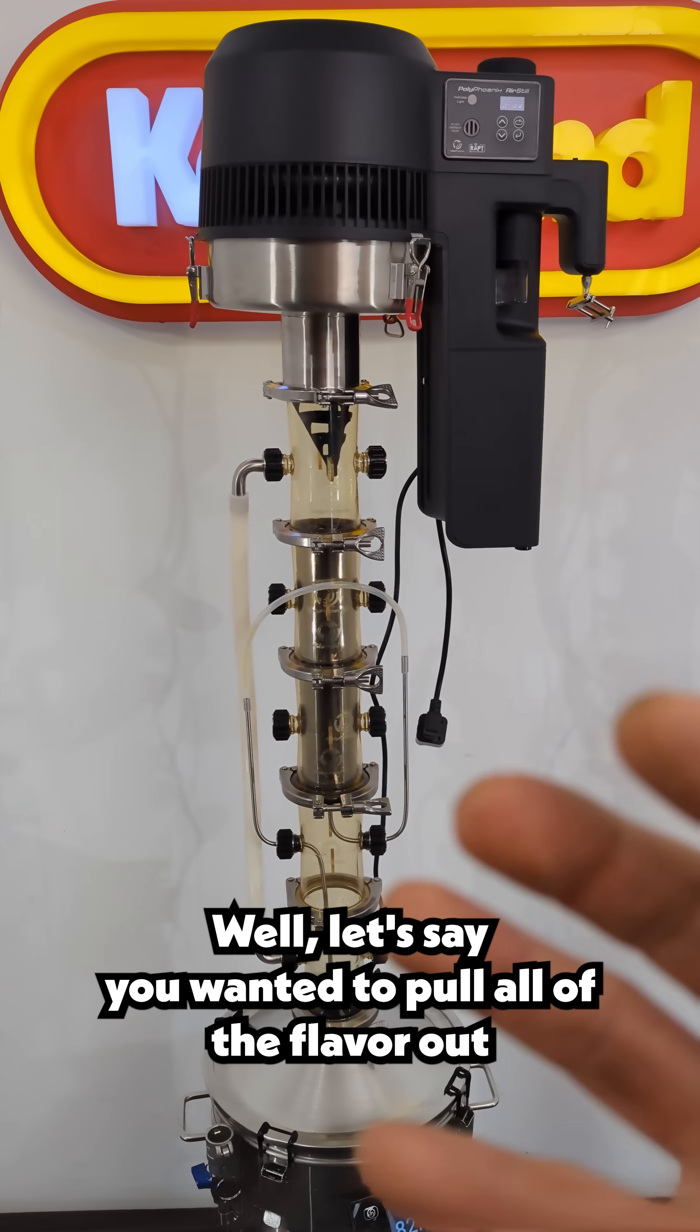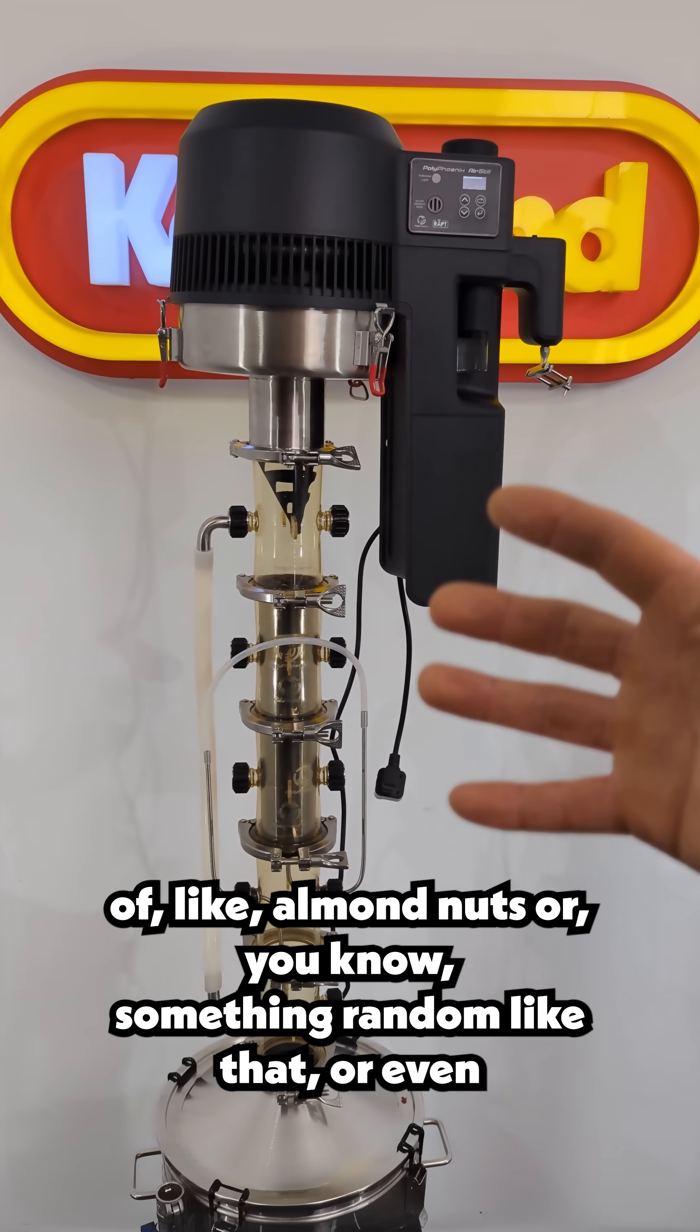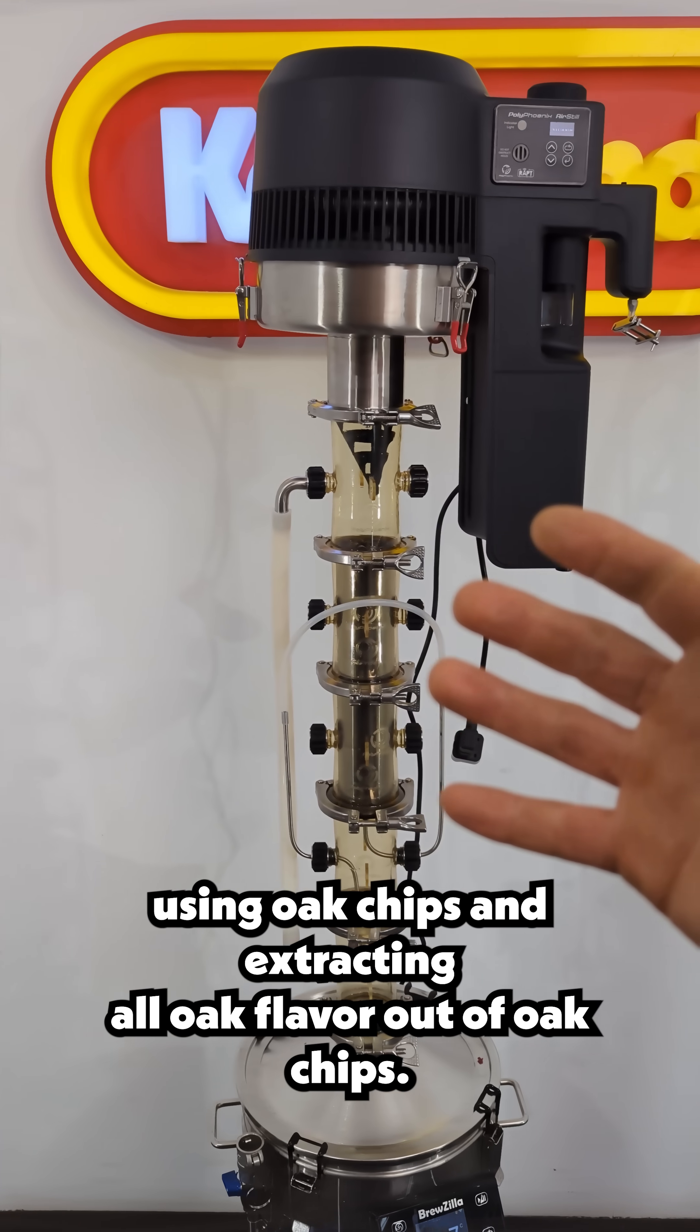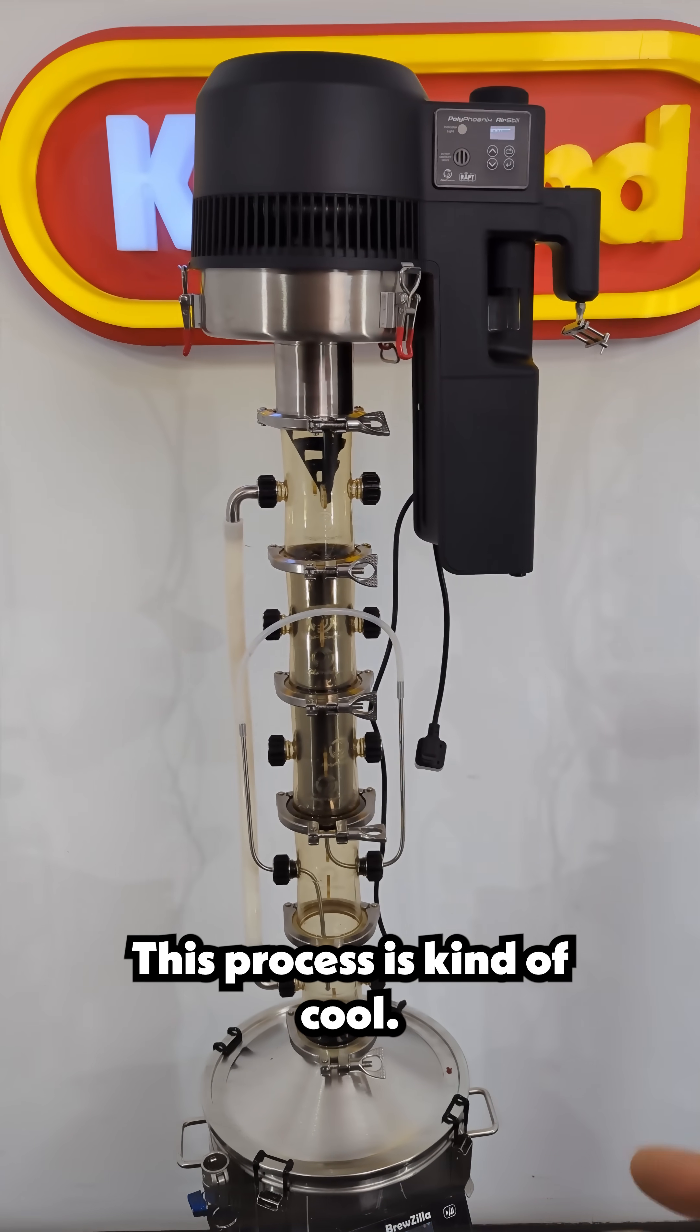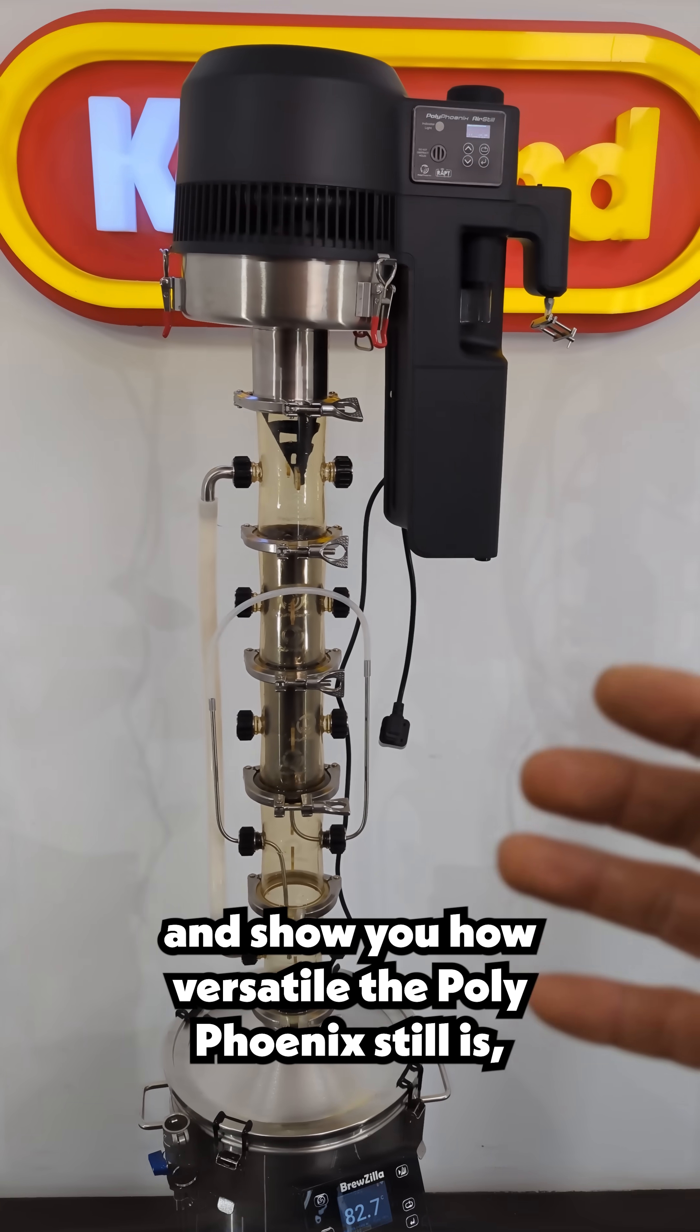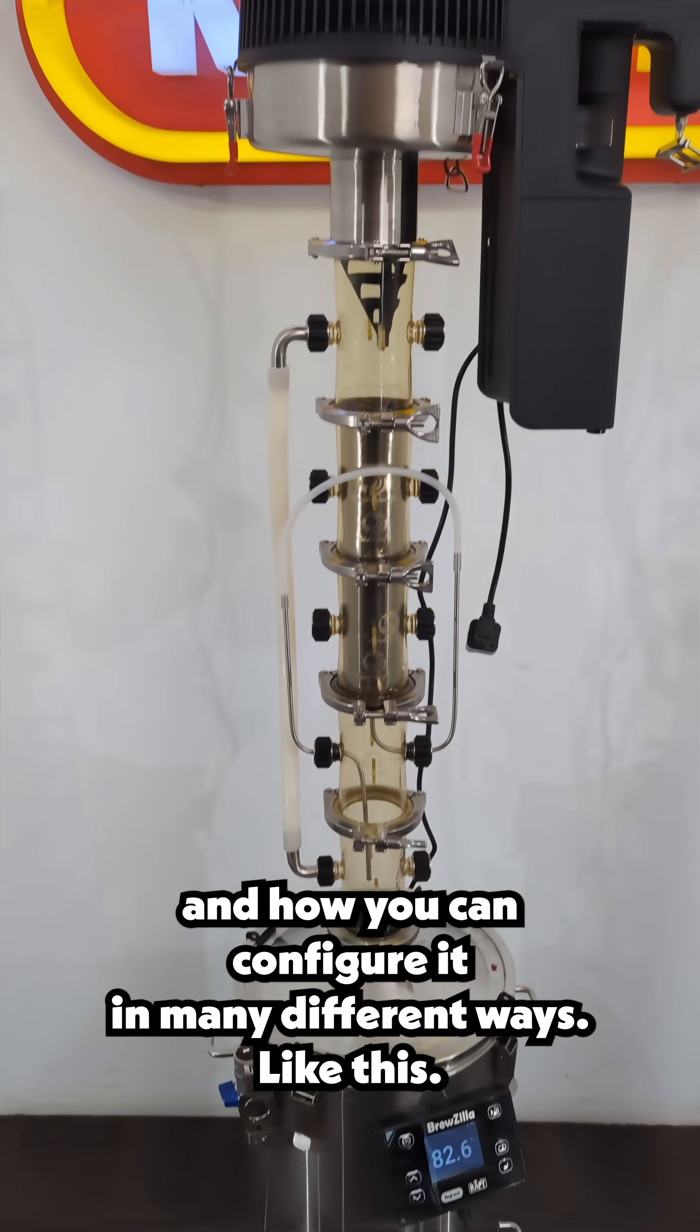Well, let's say you wanted to pull all of the flavor out of almond nuts, or something random like that, or even using oak chips and extracting all oak flavor out of oak chips. This process is kind of cool. So I just wanted to show it today, and show how versatile the PolyPhoenix still is, and how you can configure it in many different ways like this.